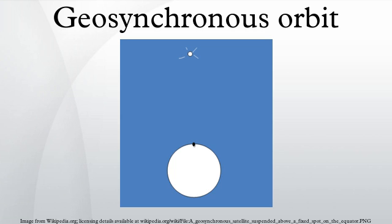In the special case of a geostationary orbit, the ground track of a satellite is a single point on the equator. In the general case of a geosynchronous orbit with a non-zero inclination or eccentricity, the ground track is a more or less distorted figure-eight, returning to the same places once per sidereal day.